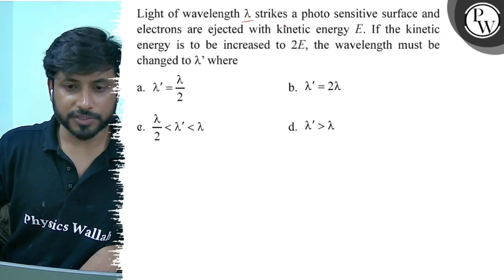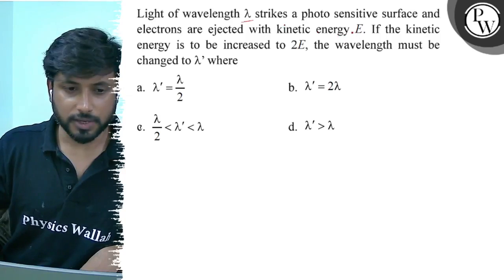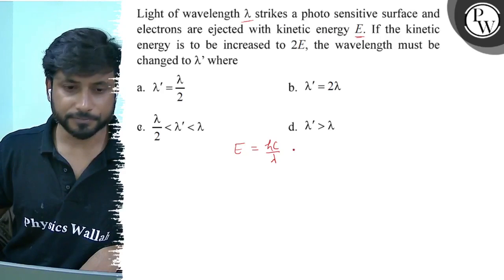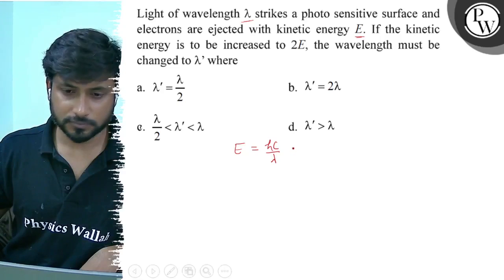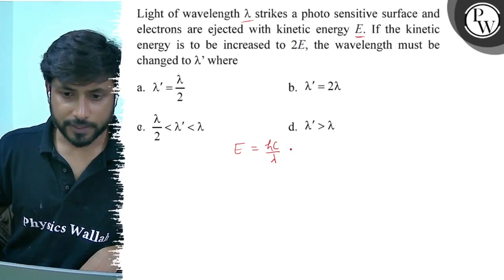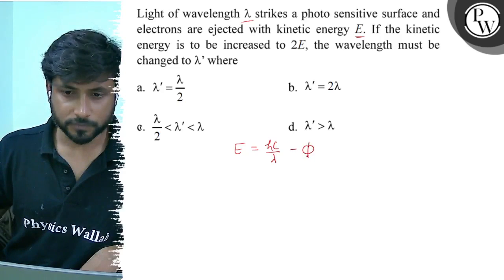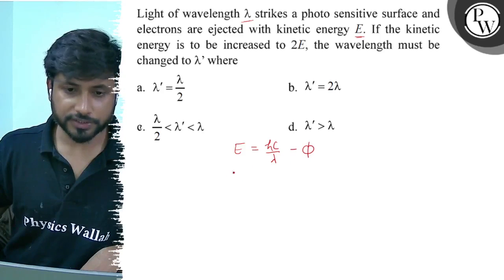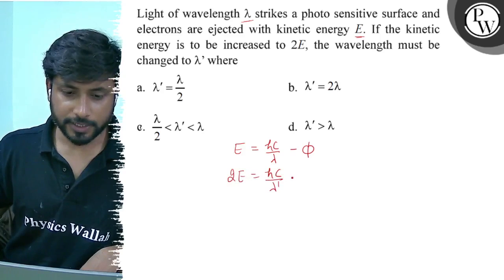Light of wavelength lambda strikes a photosensitive surface and electrons are ejected with kinetic energy E. So E equals hc by lambda minus phi. Now in the second case, kinetic energy is doubled to 2E, so 2E equals hc by lambda dash minus phi. These are our two equations.